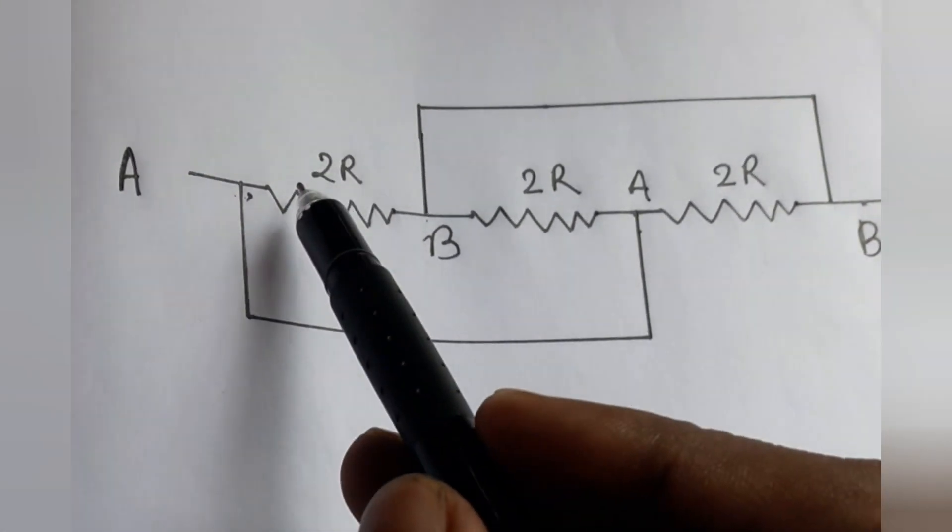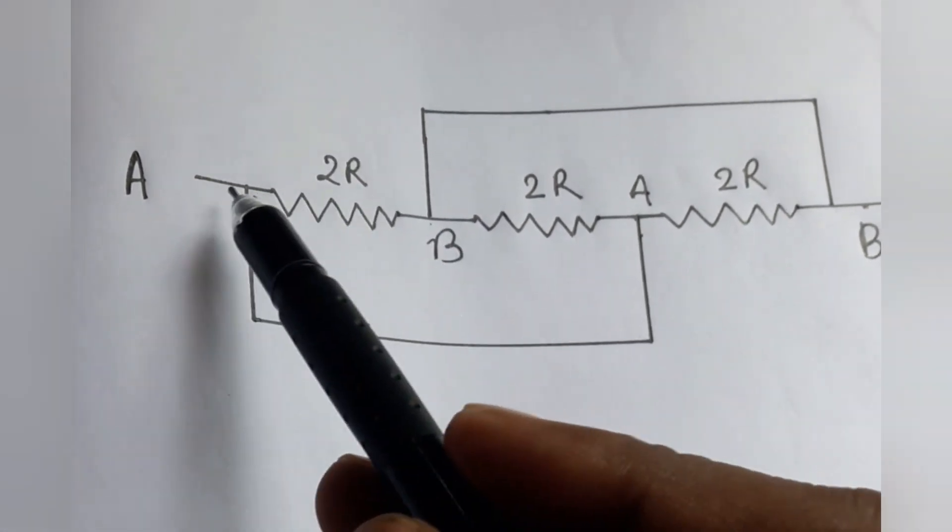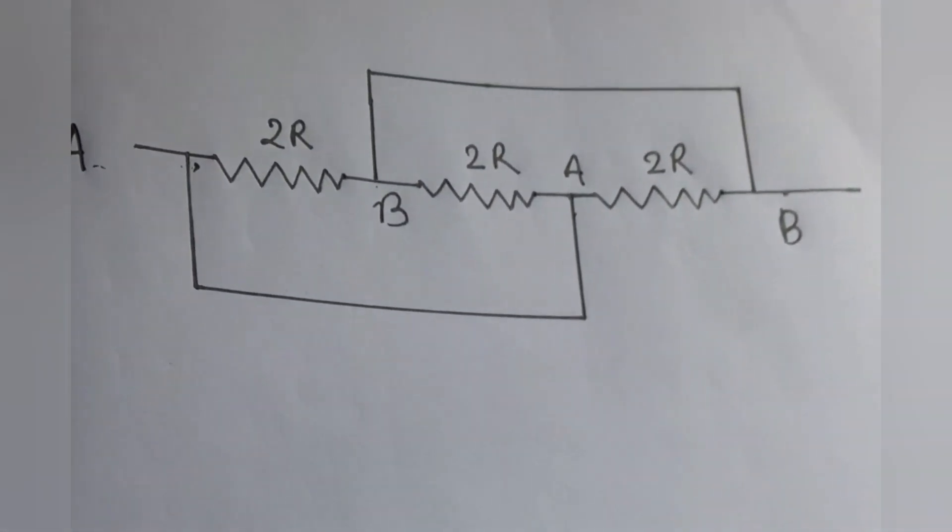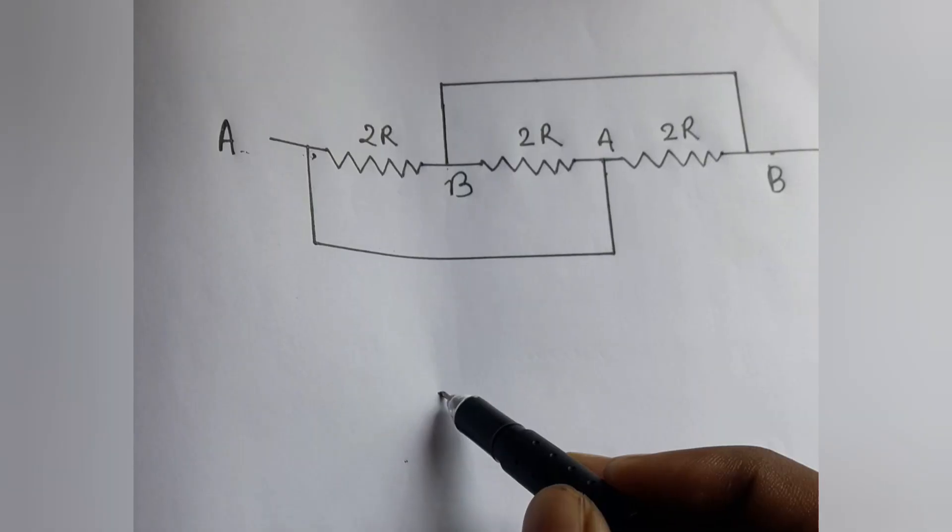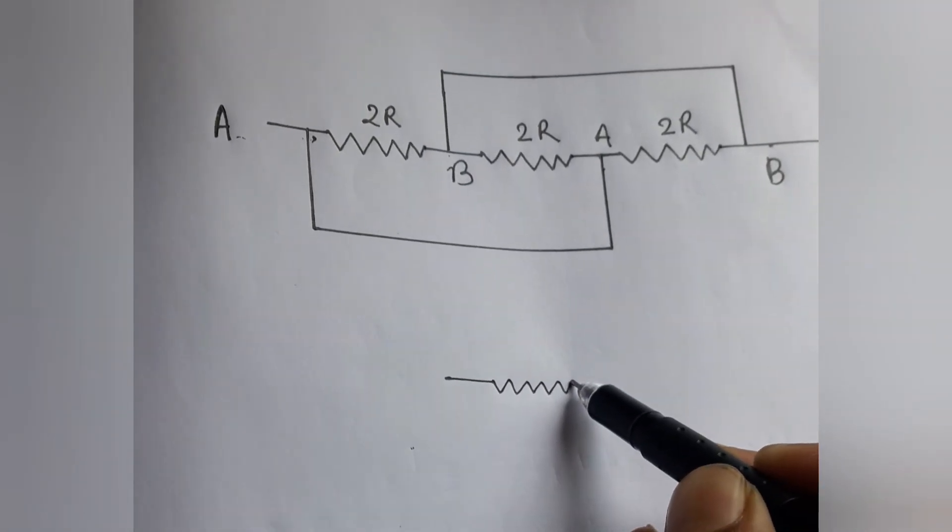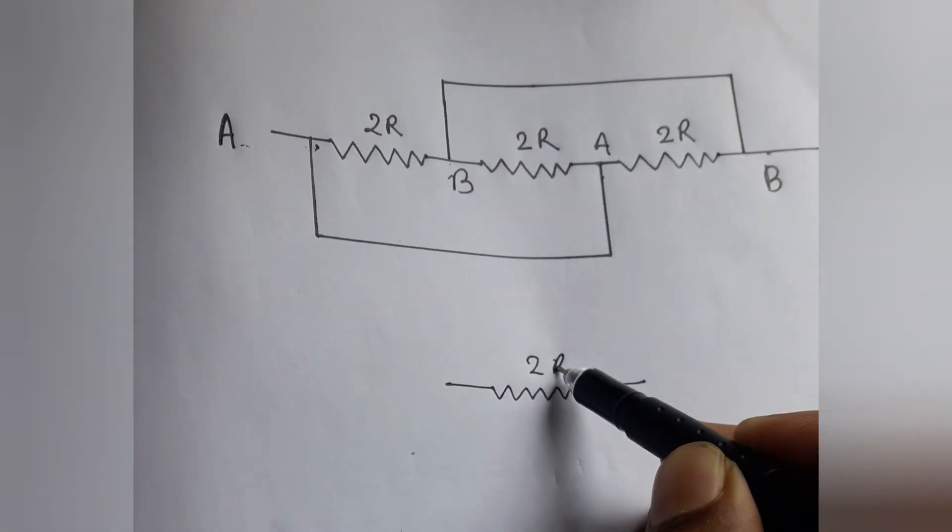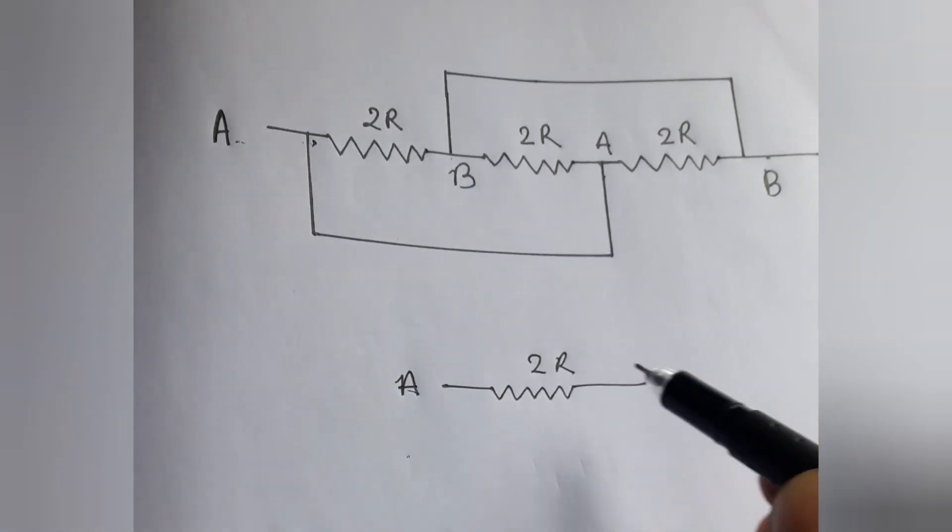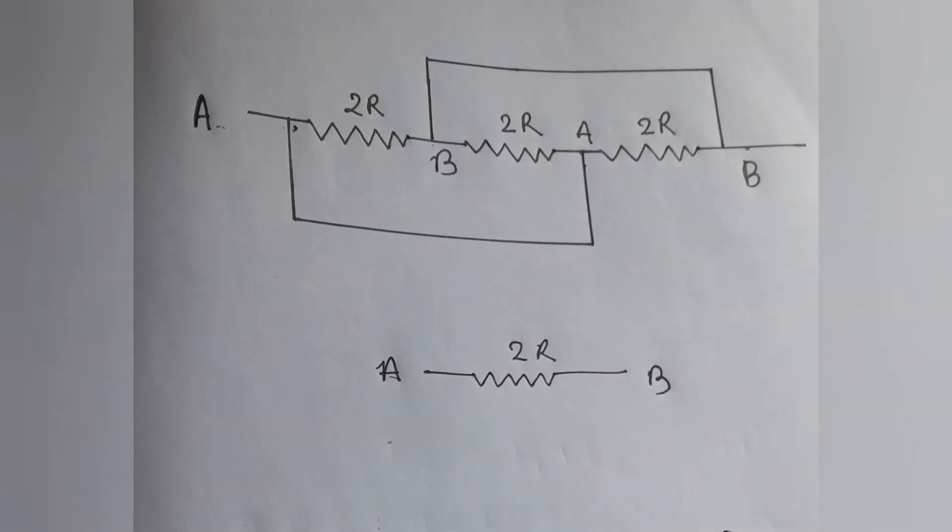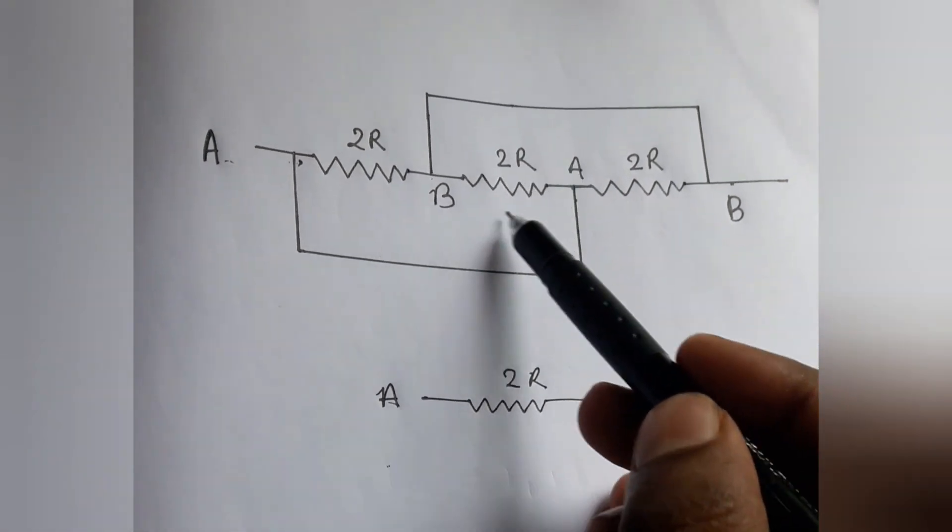We see that the resistance 2R has the two ends A and B. Now we draw the first resistance 2R. This is 2R and this is the point A and this is the point B.